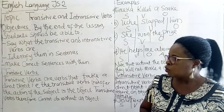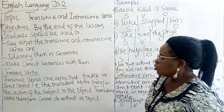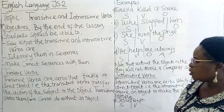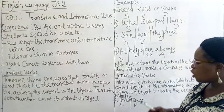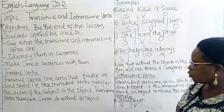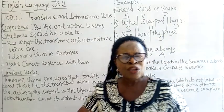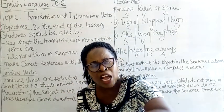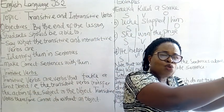Let's go to what is a transitive verb. Transitive verbs are verbs that take a direct object. That is, the transitive verb transfers the action of the subject to the object. A transitive verb is the verb where the subject transfers its action to the object.